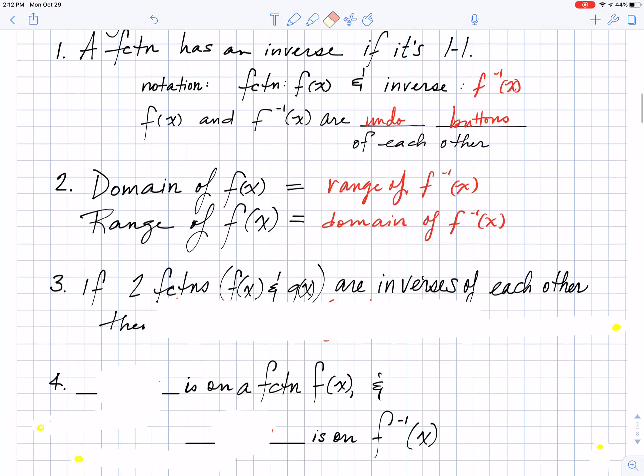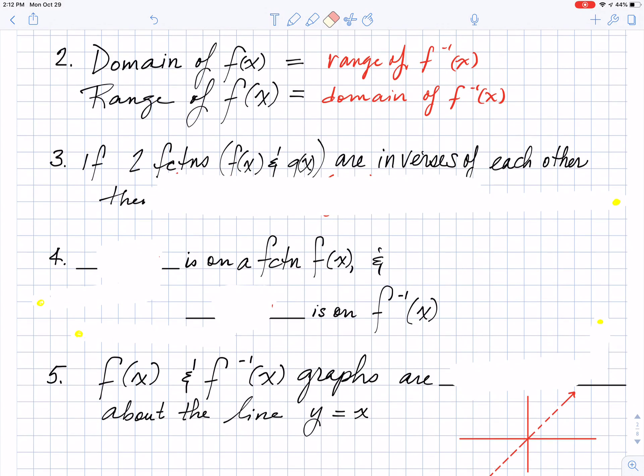Interesting fact number three says that if you have two functions that are inverses of each other, and for this particular example, I'm calling these two functions f of x and g of x, then something is always going to be true. You remember that earlier in the semester, back in chapter two, we talked about composition. So what we find that happens, especially with inverses,